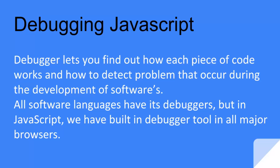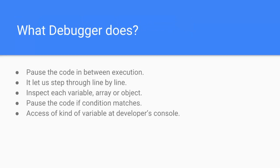There are different things that a debugger can do for us. We can pause the code in between the execution of a program, and once it is paused we can go through it line by line and check each variable — what value exists in that variable. We can verify if the required value exists there or not, just by hovering our cursor on it. We can also add a condition that stops the execution of the program if a particular condition matches.